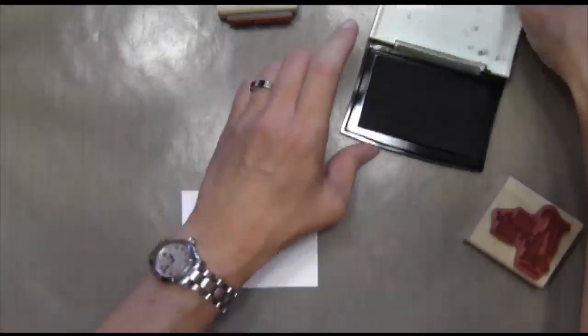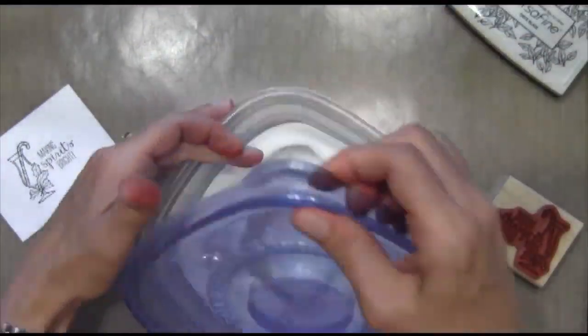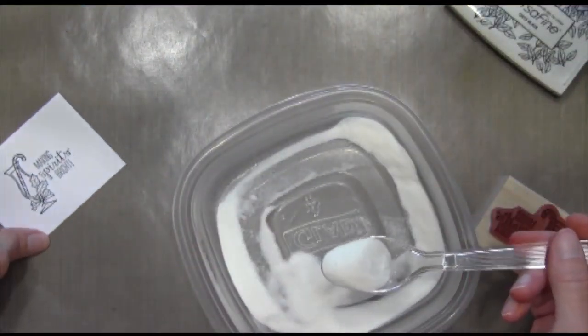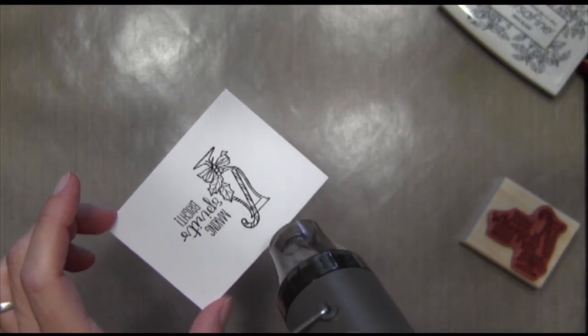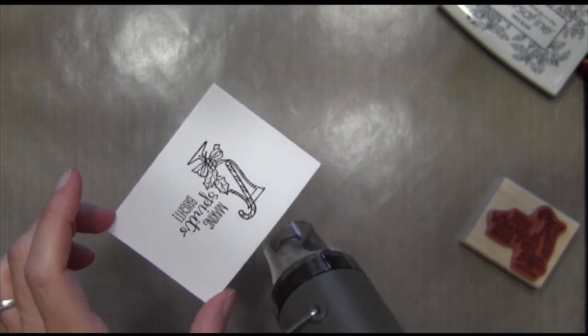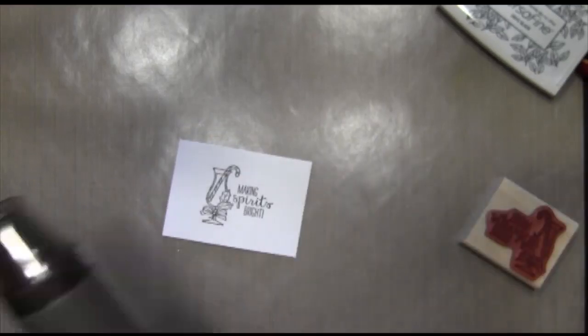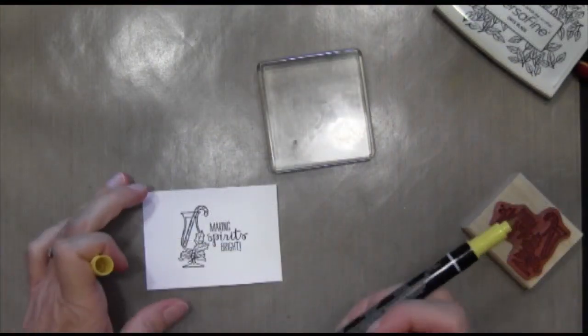Now it's time to work on the sentiment in the middle. I'm going to use some VersaFine Black Onyx ink, which is another pigment ink so that I can clear emboss it. I've been doing a lot of clear embossing lately. This is the UltraFine Hero Arts Clear Embossing Powder and I'm really enjoying it a lot.